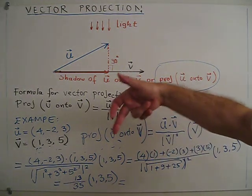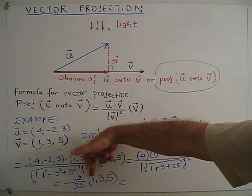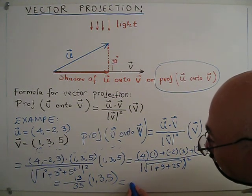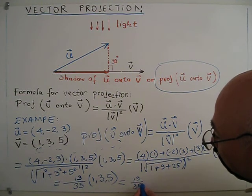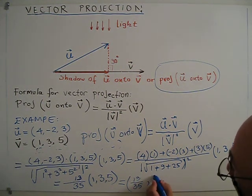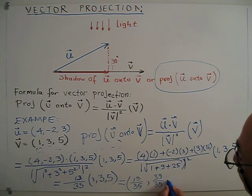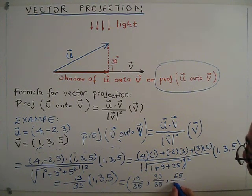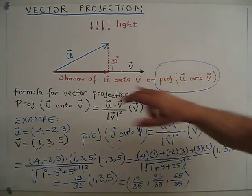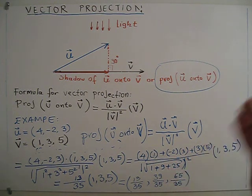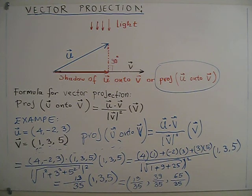The denominator, 1 plus 9 plus 25 is going to be 35, then square root again squared will be the same thing, so 35. Then 1, 3, 5. I will find the projection: 13 over 35 times 1, 13 over 35 times 3, 13 over 35 times 5. This will be 13 over 35, 39 over 35, 65 over 35. This is the red one, red vector, this one. This is vector, not scalar.